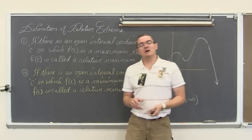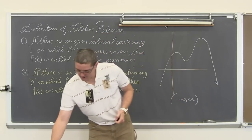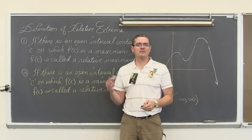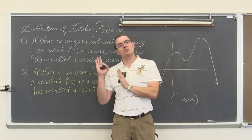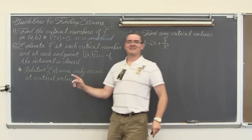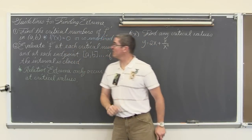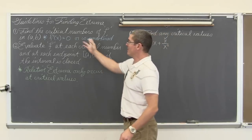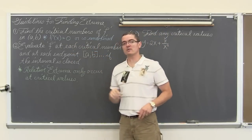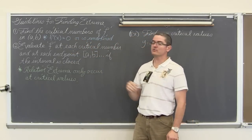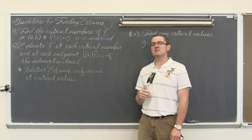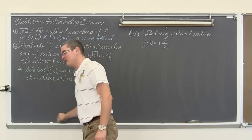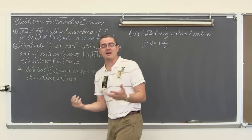We are going to be taking a look at the guidelines for finding extrema, and then walk through some examples. Here are our steps: find the critical numbers of f in the open interval of a to b. Remember that your critical values are where your first derivative is equal to zero, or your first derivative is undefined. We need that undefined part because we cannot find the derivative at a sharp bend — as an example, if we have a graph that involves an absolute value function, we cannot find the derivative at a sharp bend.